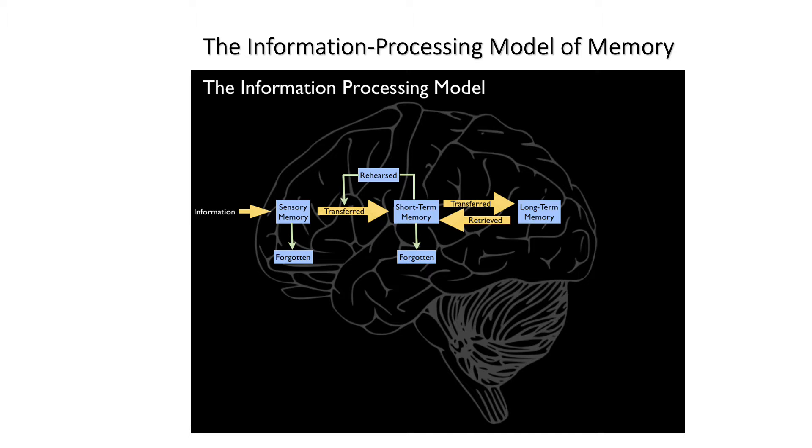If you'll recall, the information processing model of memory is the most popular model for understanding how human memory works, and it's the model that we've been using to understand memory in this module of the course.